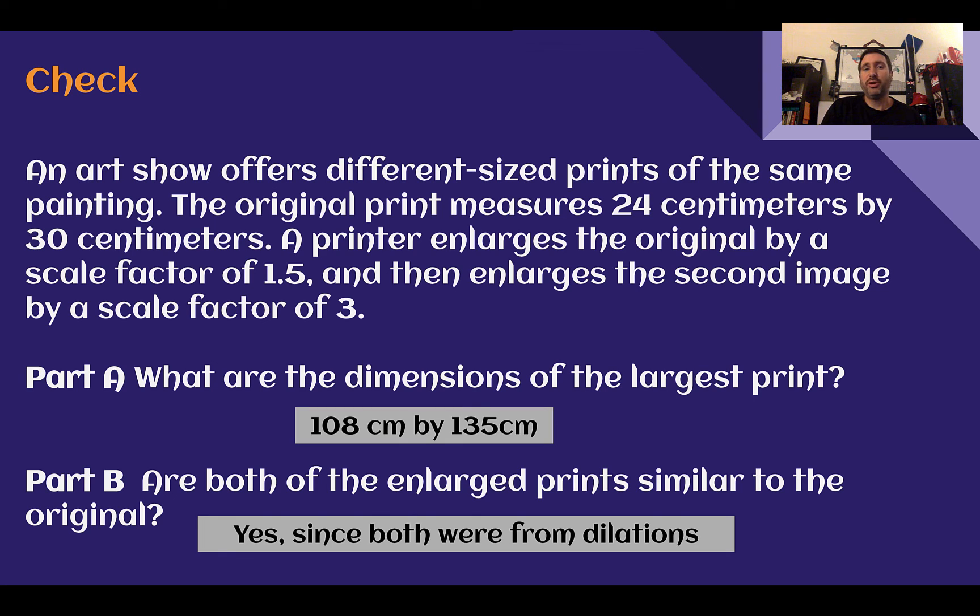Check your answer. The largest print would be 108 centimeters by 135. And then, are they similar to the original? Yes, since both were from dilations. To get this 108, we would start with our 24 and our 30 and enlarge it by 1.5. So 24 times 1.5 would go to 36. 30 times 1.5 would go to 45. Then if we're buying a scale factor of 3, 36 times 3 is 108. 45 times 3 is 135.